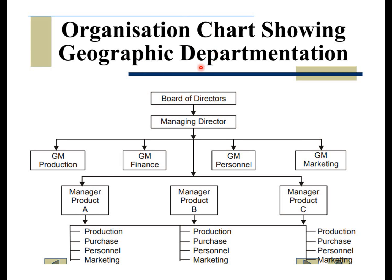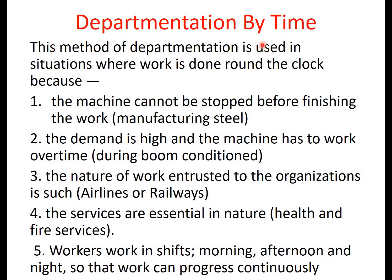Looking at the organization chart for geographic departmentation: there is a board of directors, a managing director, then GM production, finance, personnel, and marketing. Below these are Product Manager A, B, and C, each located in a particular geographical area, with different functions performed under each product manager. This is the organization chart showing geographical or regional departmentation.